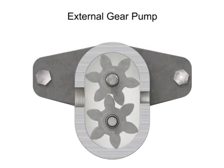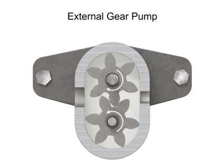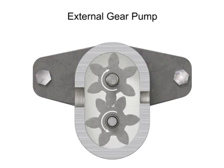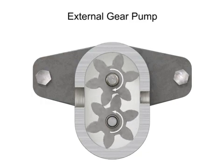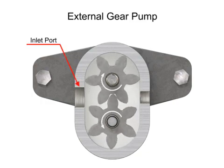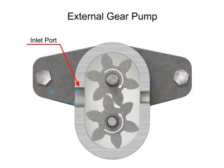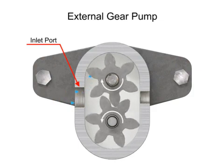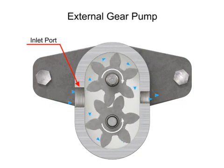As the gears rotate away from each other and come out of mesh, they create an expanding volume on the inlet side of the pump. This creates a vacuum at the inlet port, allowing fluid to flow into the pump.